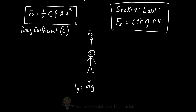As the skydiver falls, velocity increases, and as velocity increases the drag force also increases. The force due to gravity remains constant. As soon as the skydiver jumps out of the aircraft, the drag force is very low because velocity is low, so they accelerate toward the ground. As velocity increases and drag force increases, they'll reach a state of terminal velocity, at which point the drag force and the force due to gravity are equal to one another.